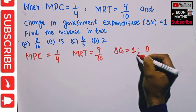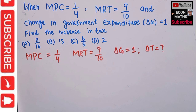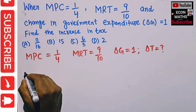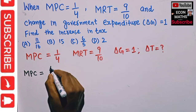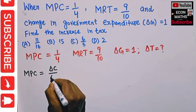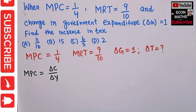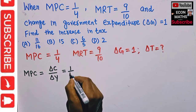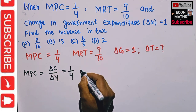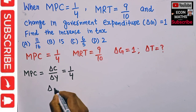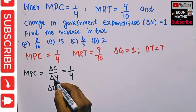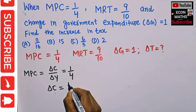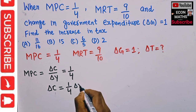Now let us see — first, MPC. Marginal propensity to consume is simply equal to the change in consumption due to change in income. That is the definition of MPC, and it is given as 1/4. Solving for consumption: change in consumption (ΔC) will be equal to 1/4 times ΔY.